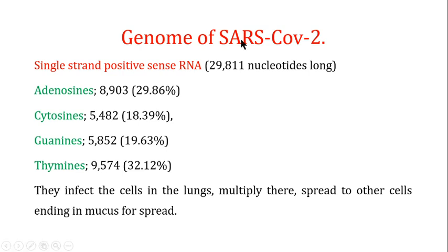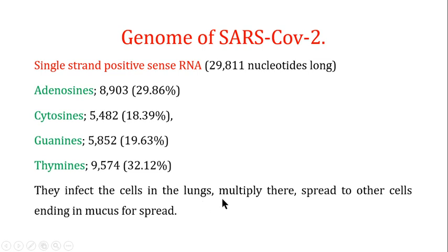The genome of COVID-19 is a single-stranded positive-sense RNA. One study states it is 29,811 nucleotides long, with adenine at 29.86%, adenosines at 18.39%, cytosines at 19.63%, guanines, and 32.12% thymines. Regarding its target, COVID-19 infects cells in the lungs, multiplies there, and spreads to other cells, ending up in mucus for transmission. A symptomatic person can then transfer the virus to a non-infected person.